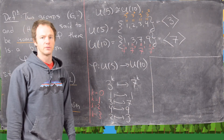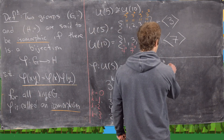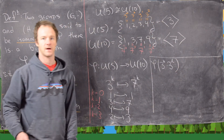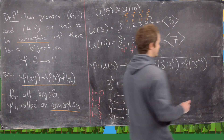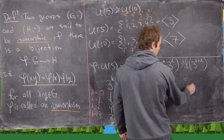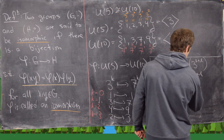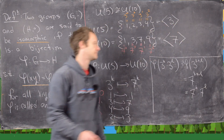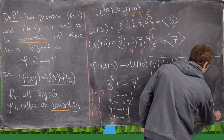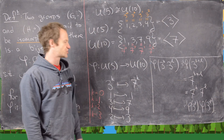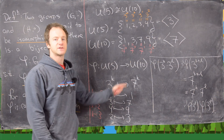Now we verify the group rule is preserved. phi(3ᵏ · 3ˡ) = phi(3^(k+l)) = 7^(k+l) = 7ᵏ · 7ˡ = phi(3ᵏ) · phi(3ˡ). So the group operation is compatible, confirming phi is an isomorphism.